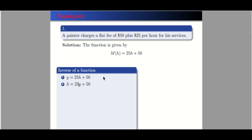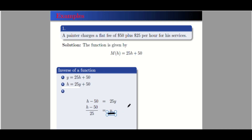Step three is to solve for y in terms of the other variable h. Transpose positive 50 to the other side so it becomes negative 50, giving us h minus 50 = 25y. Then divide both sides by 25, so we get (h − 50) / 25 = y. The last step is to replace y with the inverse notation: m⁻¹(h) = (h − 50) / 25.